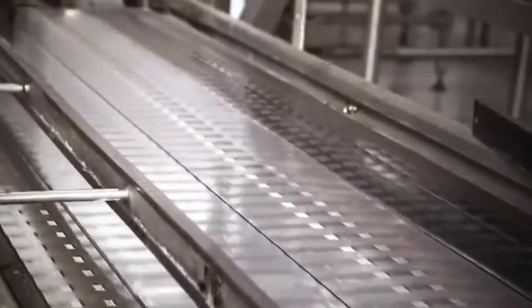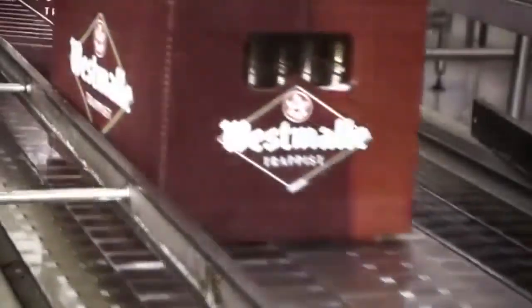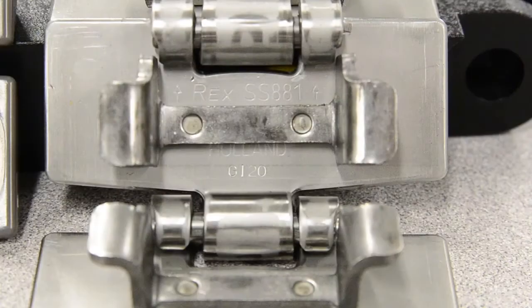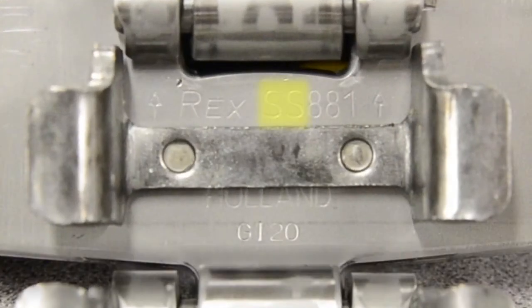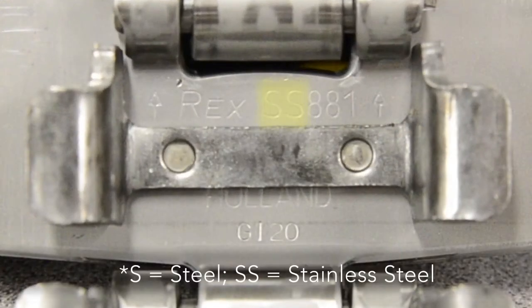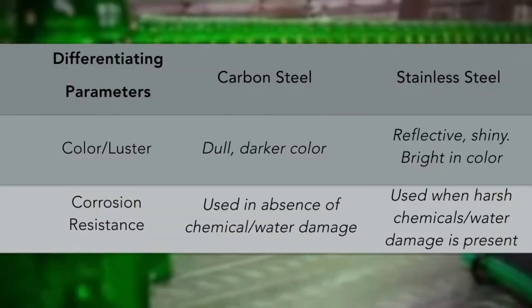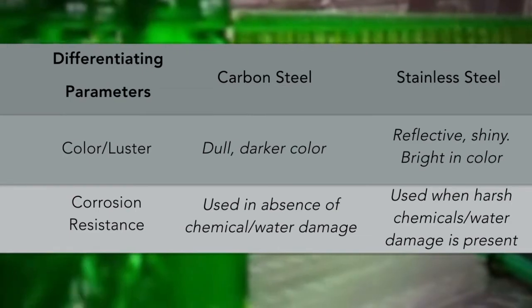When identifying whether a metal chain is composed of carbon steel or stainless steel, check the bottom of the chain first for a detailed description including the material. If this description is illegible or unreachable due to running production, we can use these parameters to determine the type of steel.